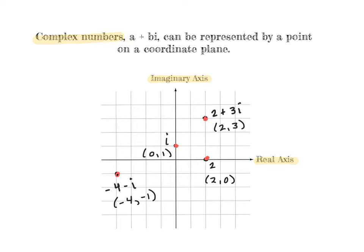Remember, a complex number is just a combination of a real and an imaginary number, such as a plus bi. So now, our x-axis, or what used to be our x-axis, is now going to be called the real axis, and it represents the real number. And what used to be the y-axis is now the imaginary axis.